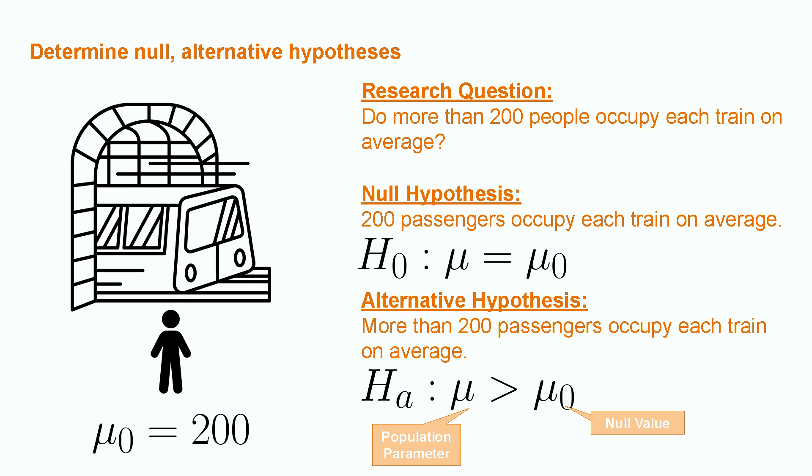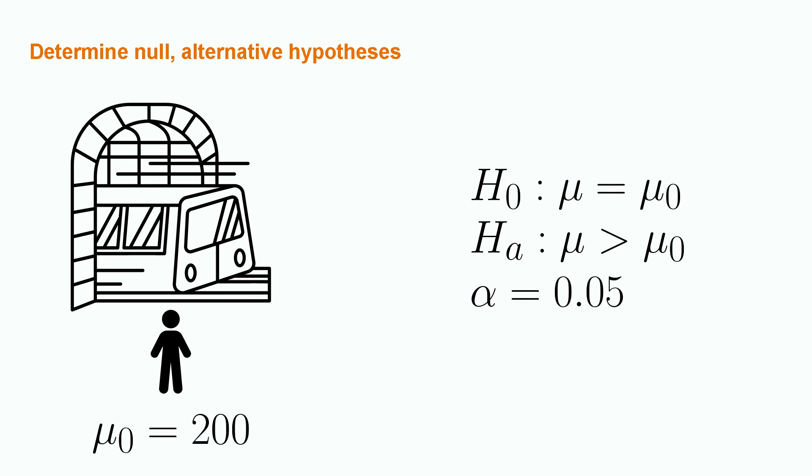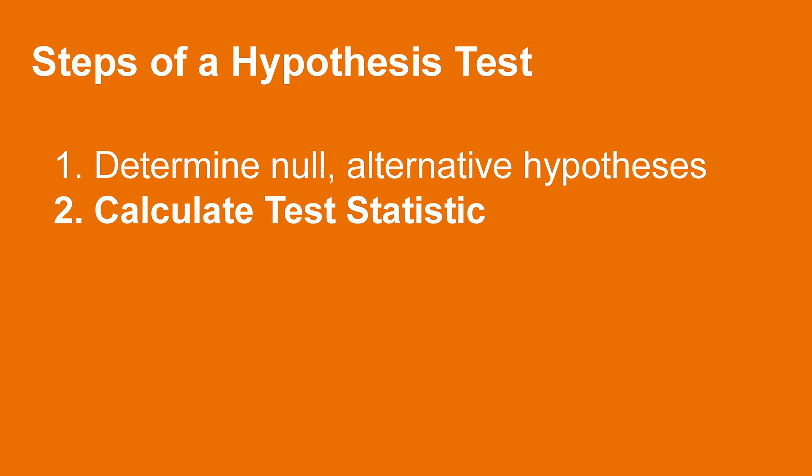Essentially, this is the claim that the population parameter is greater than the null value. Finally, we will determine a significance level at which we will accept that the gathered data represents a true deviation from the null, rather than something we can attribute to chance. Commonly, this level is set to 5%, and we denote the significance level as alpha equals 0.05. The relevant information to continue are the equations written in black, but we will come back to the written-out hypothesis in the last step. In summary for stage 1, we have our null hypothesis that the population parameter equals mu0, an alternative that mu is greater than mu0, and a significance level of 0.05. This sets us up for step 2, the calculation of the test statistic.